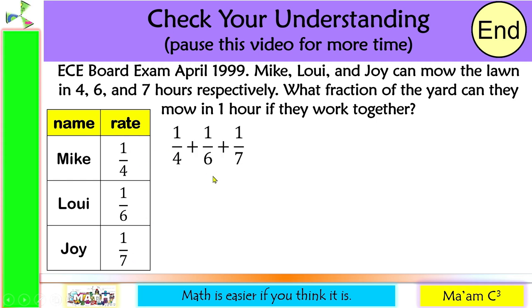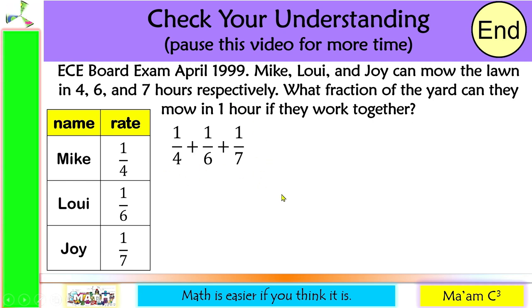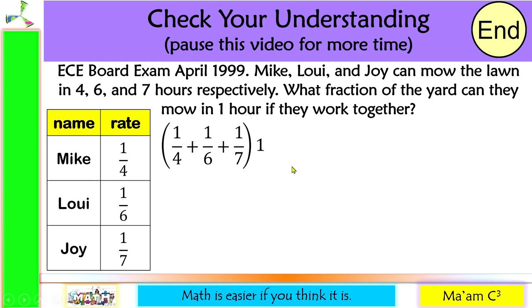So we have 1 fourth plus 1 sixth plus 1 over 7, multiplied by 1 hour. What fraction of the yard has been finished after working together for 1 hour? This equals x.